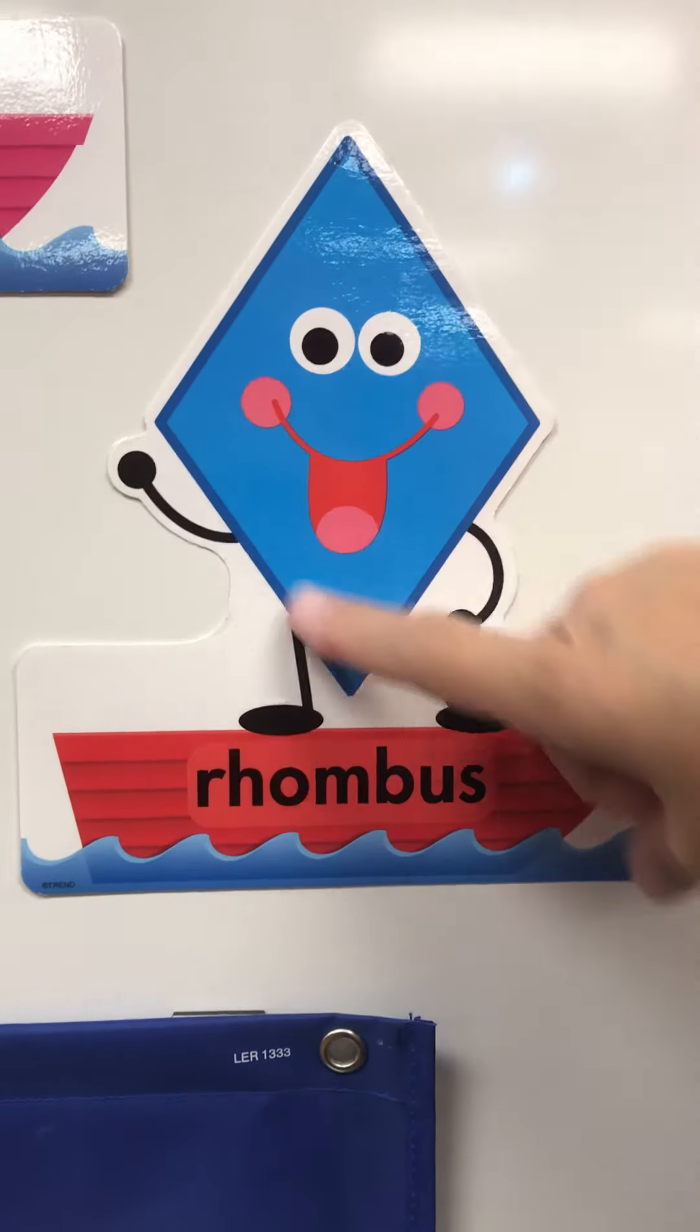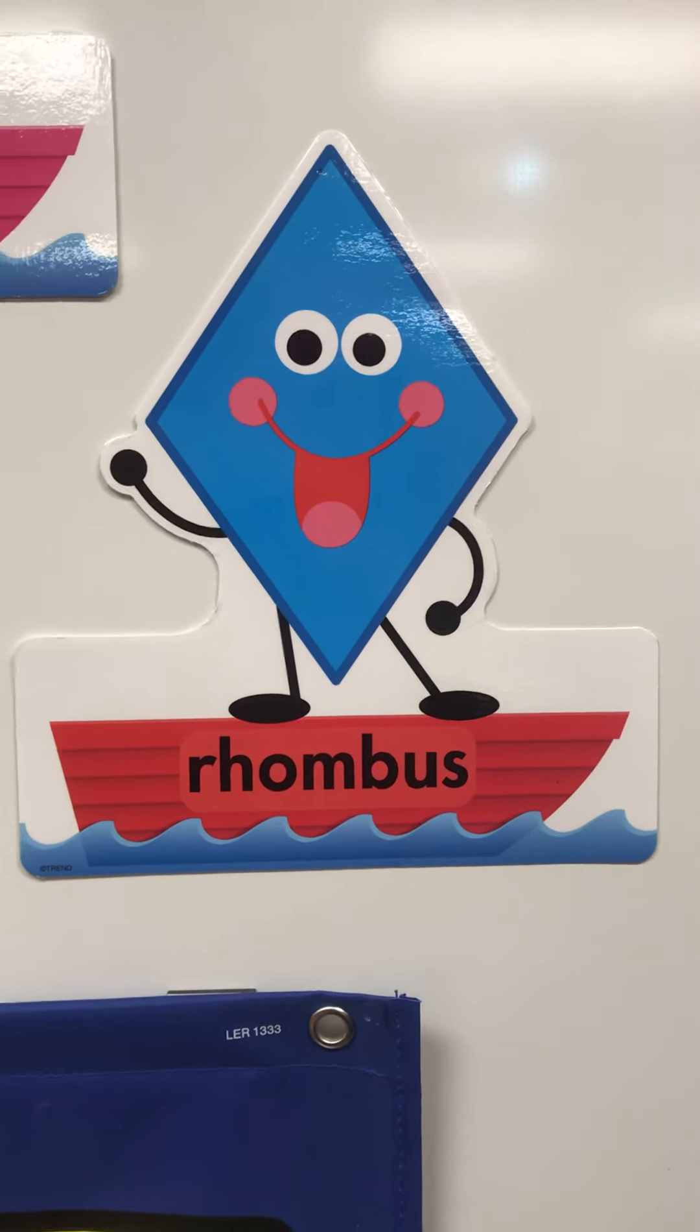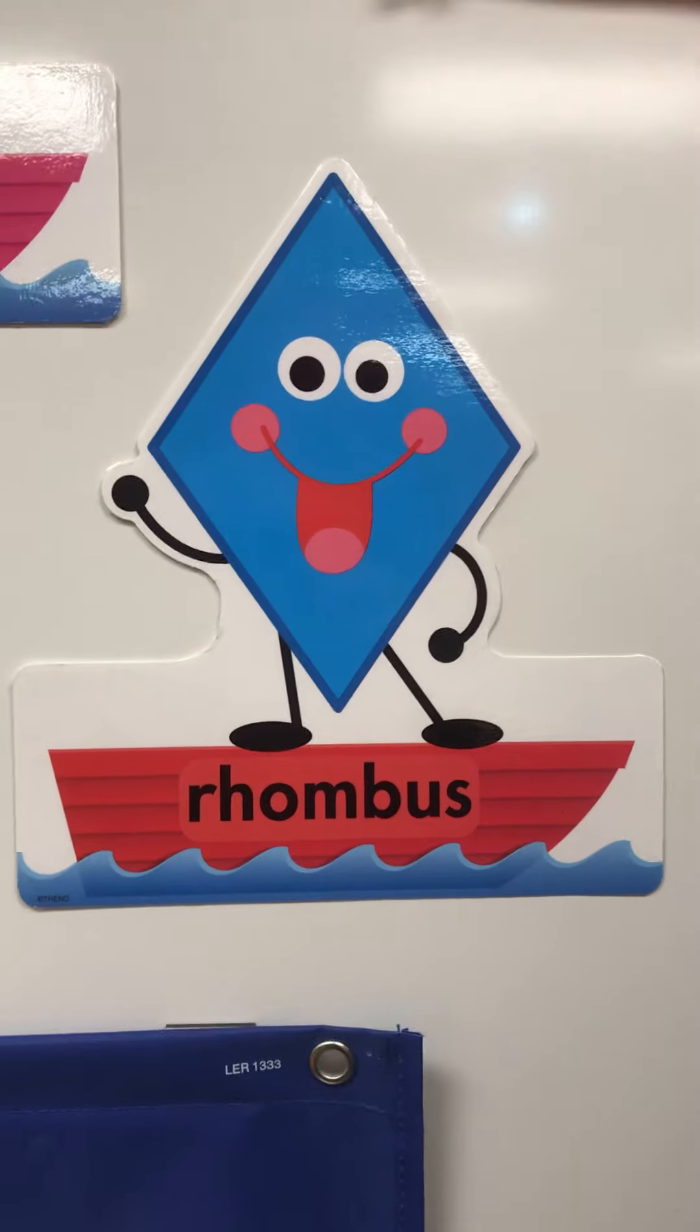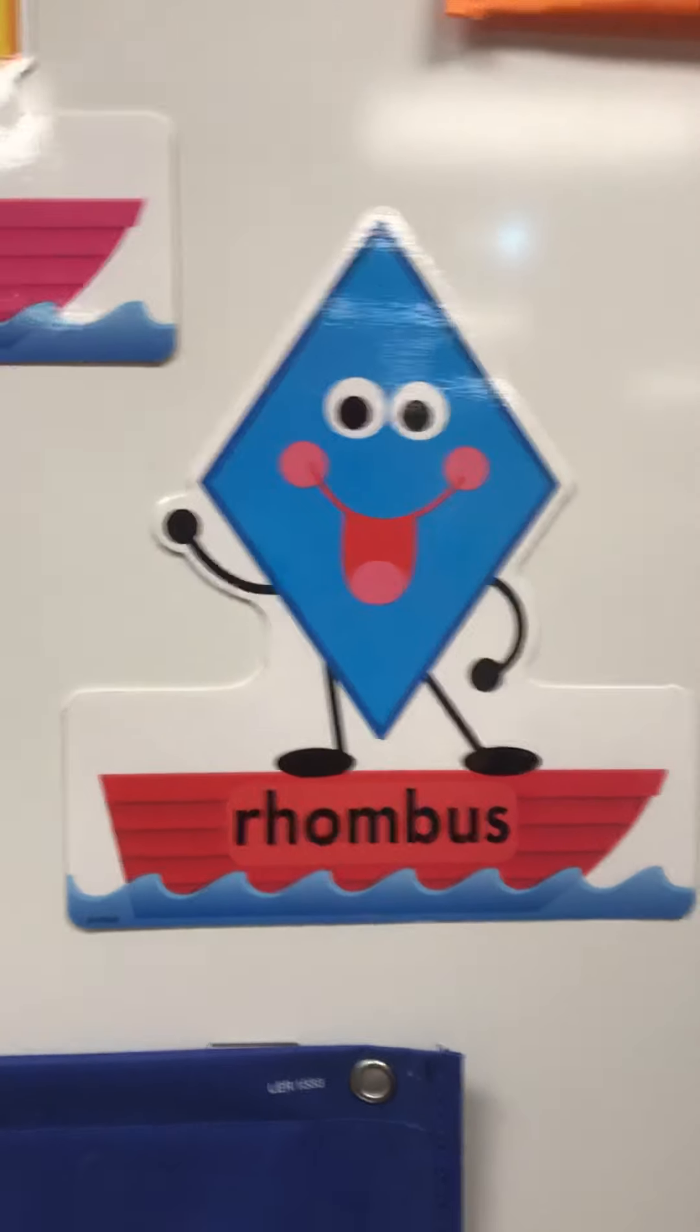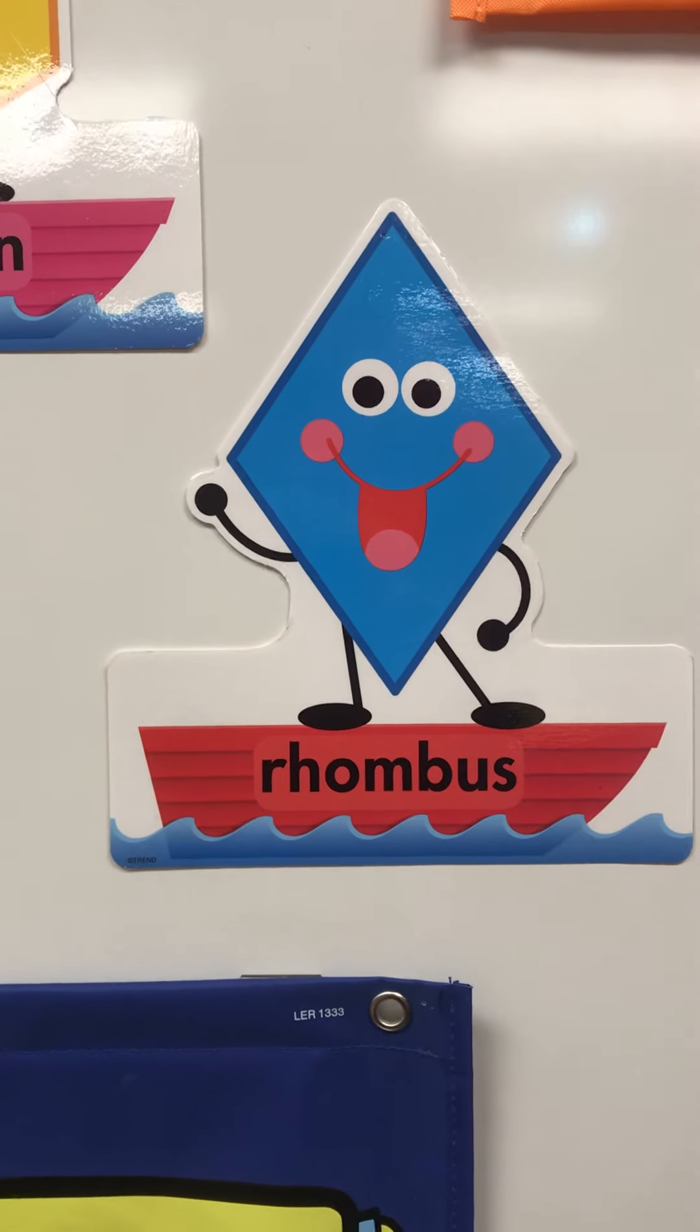See this word rhombus? It looks like a diamond and you might have called it a diamond when you were in preschool, but the kindergarten, first, second, third, fourth, all the way to 12th grade name of that shape is a rhombus. Can you say rhombus?